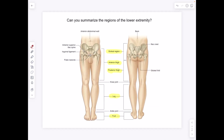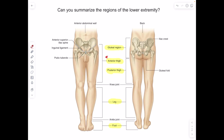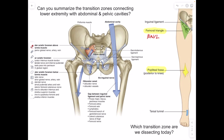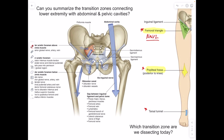Can you summarize the regions of the lower extremity? Today we're looking at the anterior thigh and the medial thigh. We also have the posterior thigh, the gluteal region, the leg, and the foot — all of these will be on our exam. Transition zones connecting the lower extremity with the abdominal and pelvic cavity: primarily we're concerned with the femoral triangle. We also have the popliteal fossa behind the knee, and the tarsal tunnel, which we'll get to in a future lab.